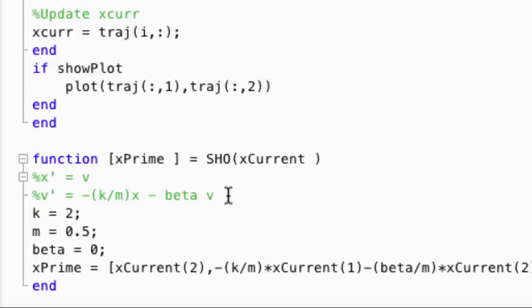The simple harmonic oscillator is given by these two differential equations and have three parameters, K, M, and beta. We then calculate X prime based on these differential equations, evaluate it at X current, and return X prime.